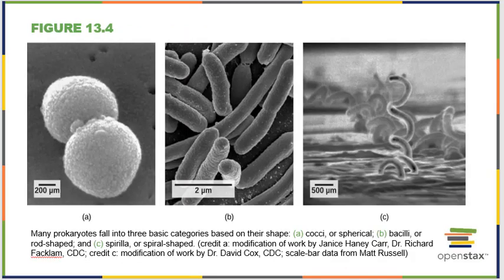Most prokaryotes fall into three basic shapes. Cocci are spherical shaped. Some bacteria are bacilli, or rod shaped. And then we have the spirilla — spiral or corkscrew shaped bacteria. Everybody kind of falls into these three categories.